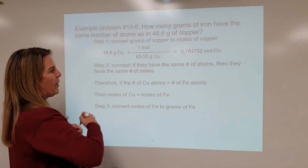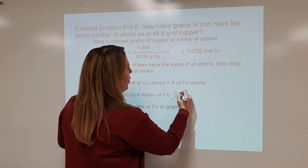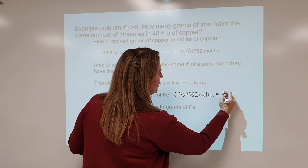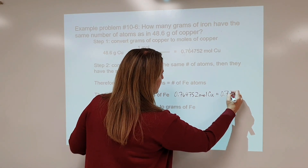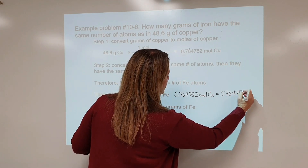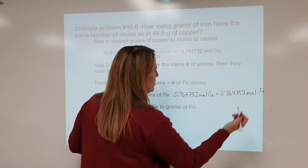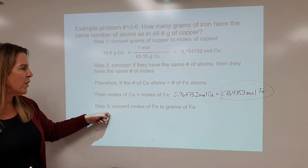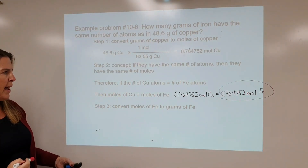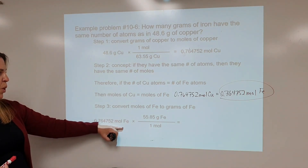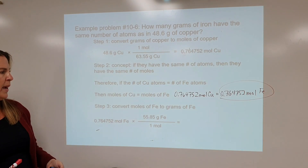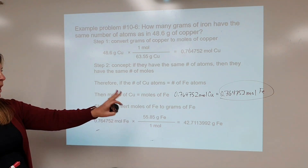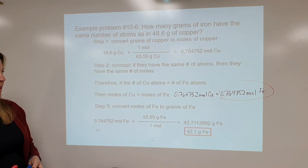That means 0.764752 moles of copper is equivalent in terms of the number of particles to 0.764752 moles of Fe. We're going to now take this number and convert it to grams using the molar mass: 0.764752 moles of iron using the molar mass gives us, unrounded, 42.711 grams of iron. We're going to round that to three significant figures.